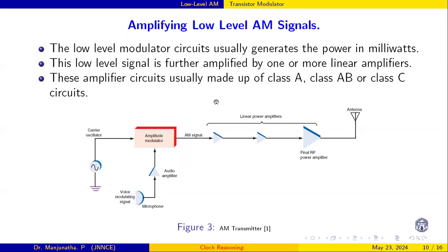I have uploaded videos on AM modulator using diode and transistor — those are very low level amplifiers. Low level modulator circuits usually generate power in milliwatts. This low level signal is further amplified by one or two stages of power amplifier, which may be class A, class AB, or class C.